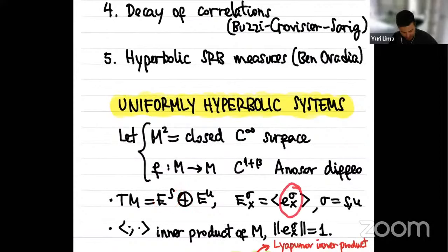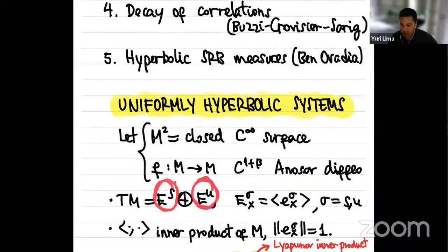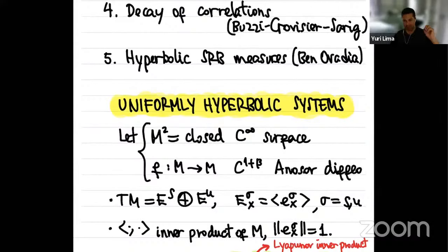ES and EU are generated by unit vectors. In ES you have uniform contraction of vectors in the future, and in EU you have uniform expansion in the future — which is the same as uniform contraction in the past. I also assume this surface is a Riemannian surface, so there is an inner product defined on it. The idea is that these invariant directions should serve as a system of coordinates to more easily understand the diffeomorphism.